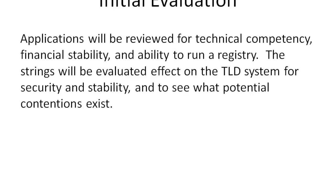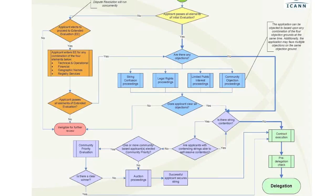They originally didn't plan on this many applications, but they're going to be batching them in groups of 500. They originally had a process called 'digital archery,' where applicants would try to hit an OK button as close as possible to a set date and time to determine their place in line. For a reason that's a little murky, they've abandoned that process, and so we'll have to see how they end up batching them. They cannot evaluate all 1,930 at once.